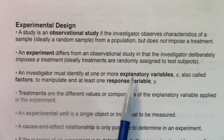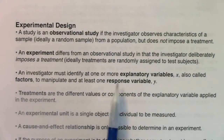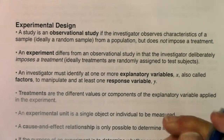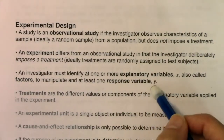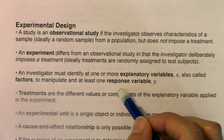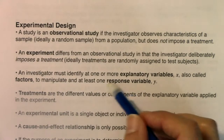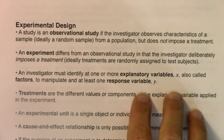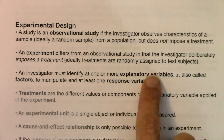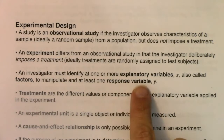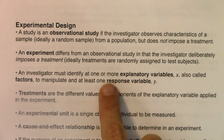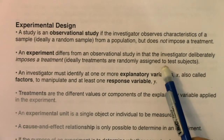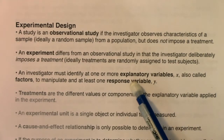So we had an experiment. For explanatory versus response variable, I find it easier to figure out the response variable first and work backwards. The response variable is whatever they're measuring or counting at the end — here, the number of crackers eaten. What did they think explained that? They thought movie type explained the number of crackers eaten. So: explanatory variable — type of movie; response variable — number of crackers eaten.